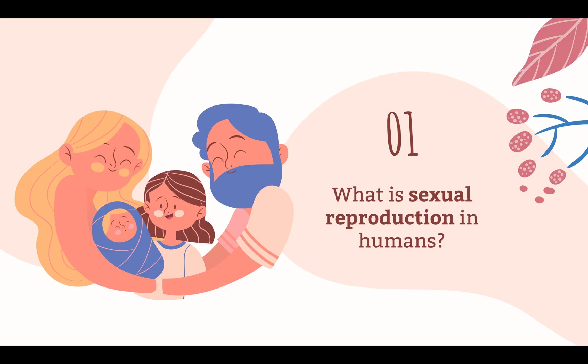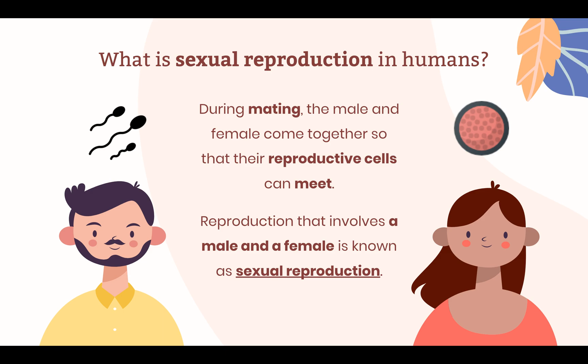Do you know what sexual reproduction in humans is? Reproduction in humans requires a male to mate with a female. During mating, the male and female come together so that their reproductive cells can meet. Reproduction which involves a male and a female is known as sexual reproduction. The human reproductive parts are important for this purpose.